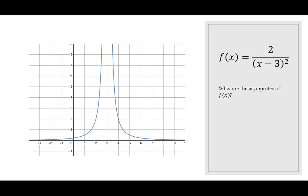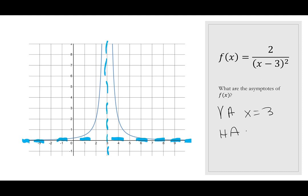Here's the graph of f(x) = 2/(x-3)². Looking for asymptotes: as x approaches 3, the function heads toward infinity — so there's a vertical asymptote at x = 3. On both sides the function flattens out along the x-axis, giving a horizontal asymptote at y = 0. The limit as x → 3⁺ is positive infinity, and the limit as x → 3⁻ is also positive infinity, but the overall limit does not exist because it's not a number.